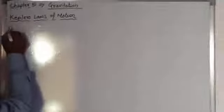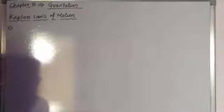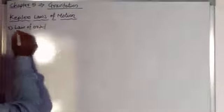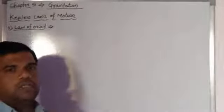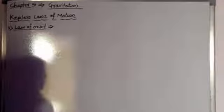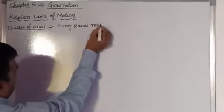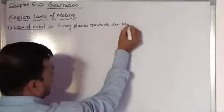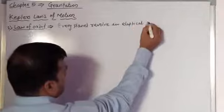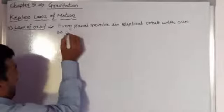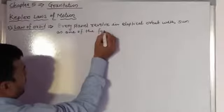The first is Kepler's first law, also called the law of orbit. This law states that every planet revolves around the sun in an elliptical orbit, with the sun as one of the foci of the elliptical orbit.